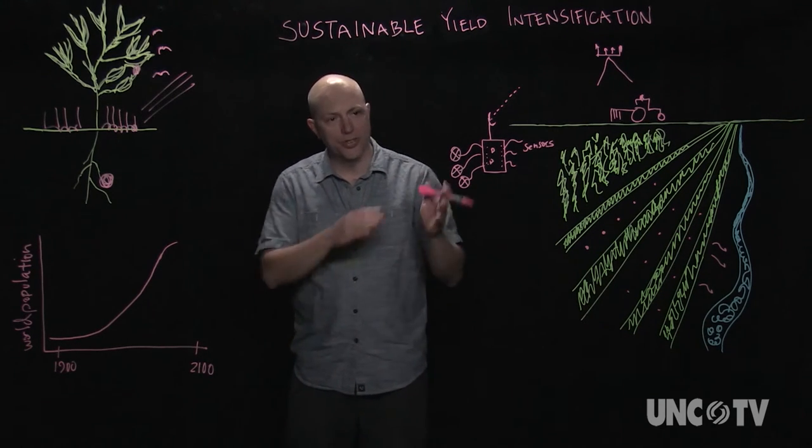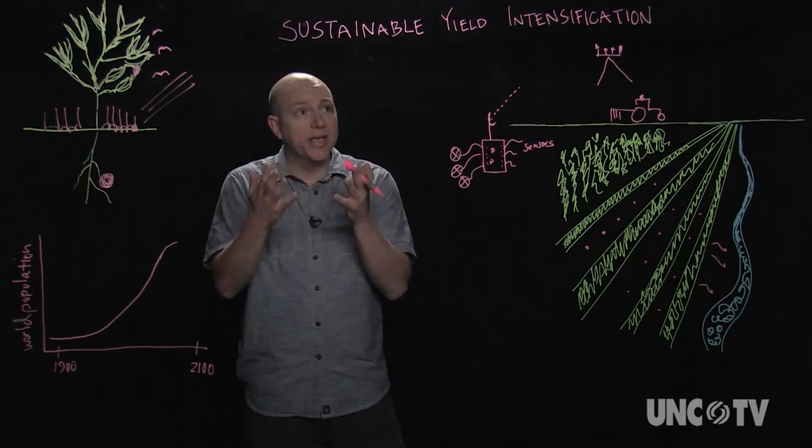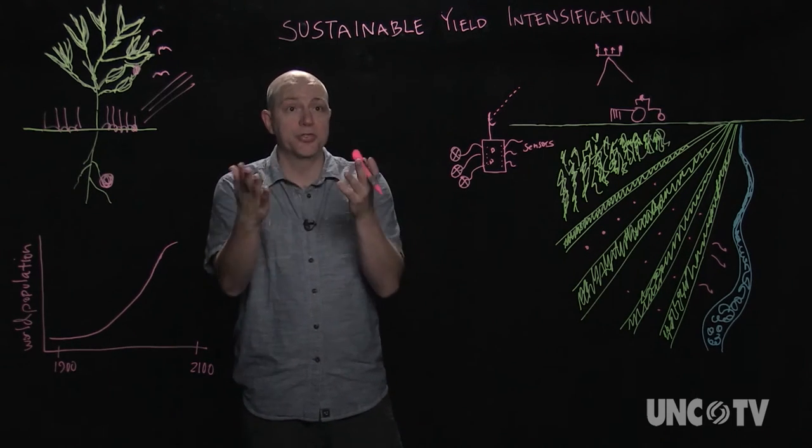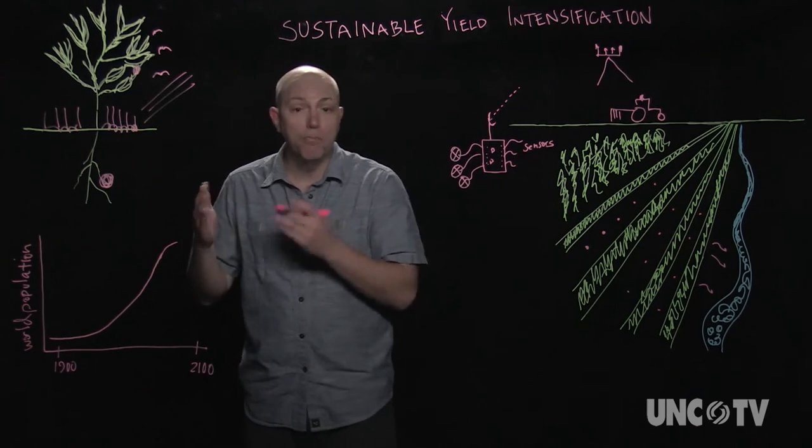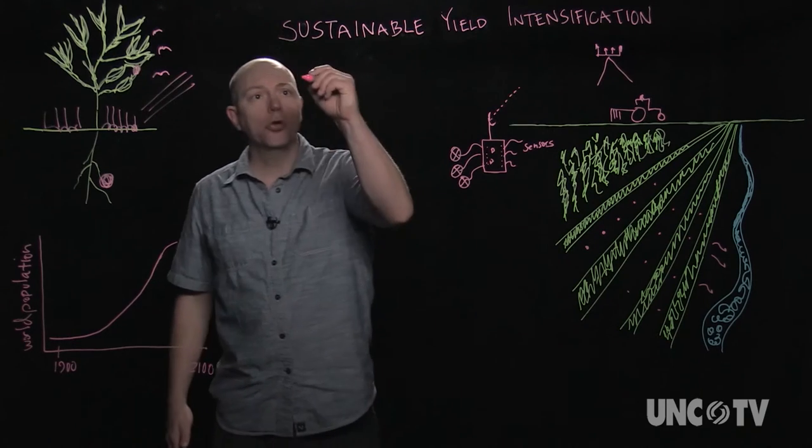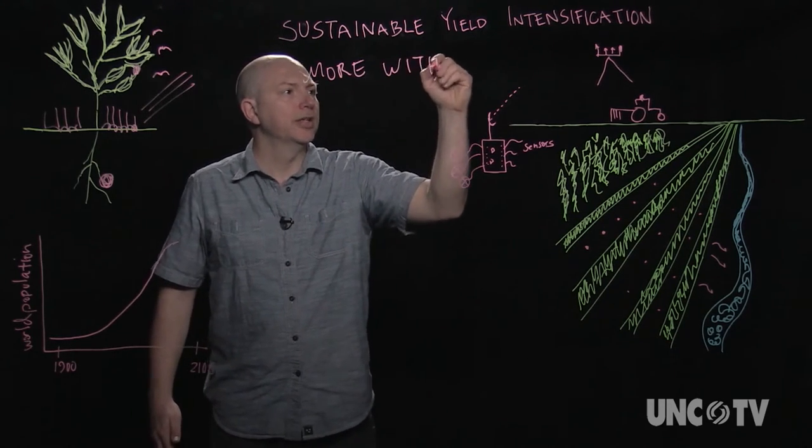So with these two approaches, bringing the Internet of Things to agriculture and improving crop plants, we're going to basically try to intensify yield sustainably. Instead of doing what we've done during the Industrial Revolution by doing more with more, we're going to be trying to do more with less.